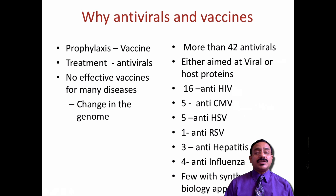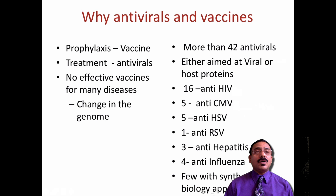Why do we need antivirals and vaccines? For prevention we need vaccines, and for treatment we need antivirals. There is no effective vaccine for many viral diseases because there is a change of genome and a lot of variation and mutations within viral strains. Approximately there are more than 42 antivirals available in the commercial market as of now.